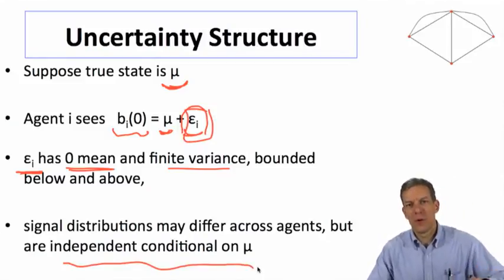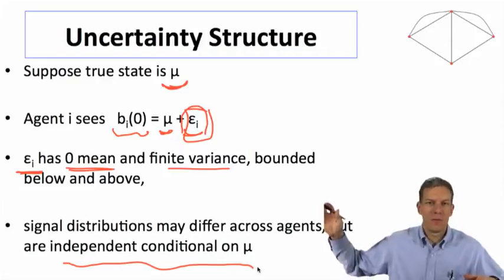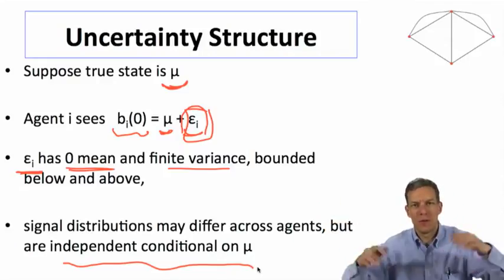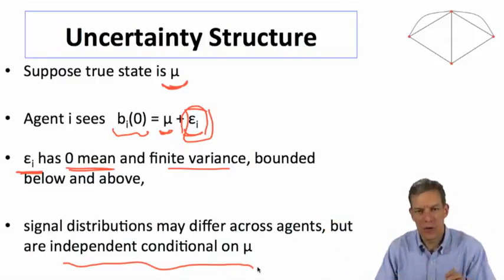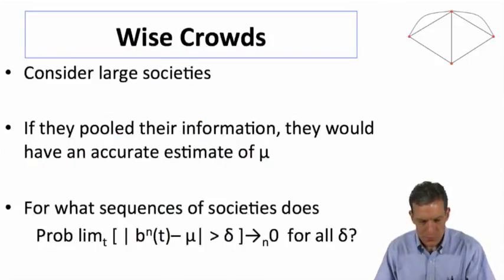Let's make sure that they're independent conditional on μ. So the errors that one person makes - one person might have a high belief, another person has a low belief. So people are making errors, but those errors aren't correlated.